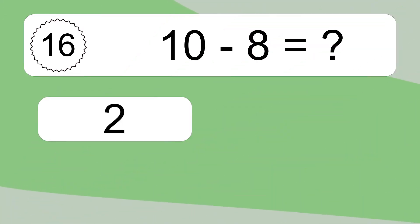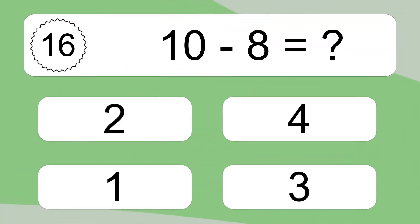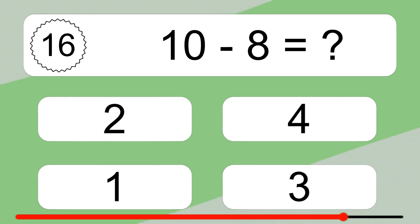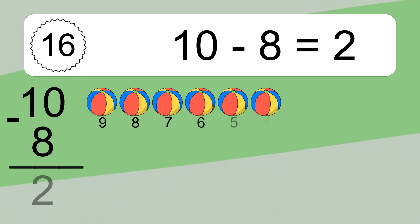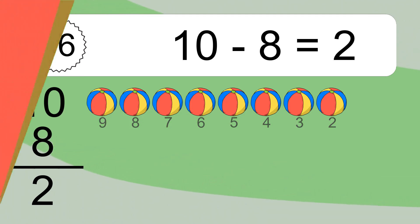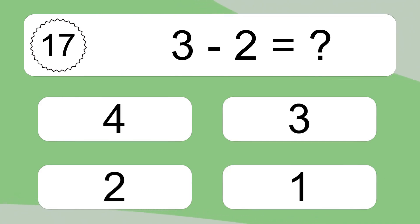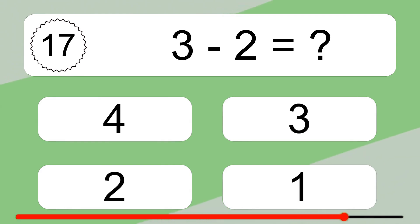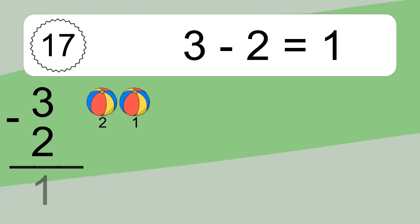10 minus 8 equals what? 10 minus 8 equals 2. Let's count it: 9, 8, 7, 6, 5, 4, 3, 2.